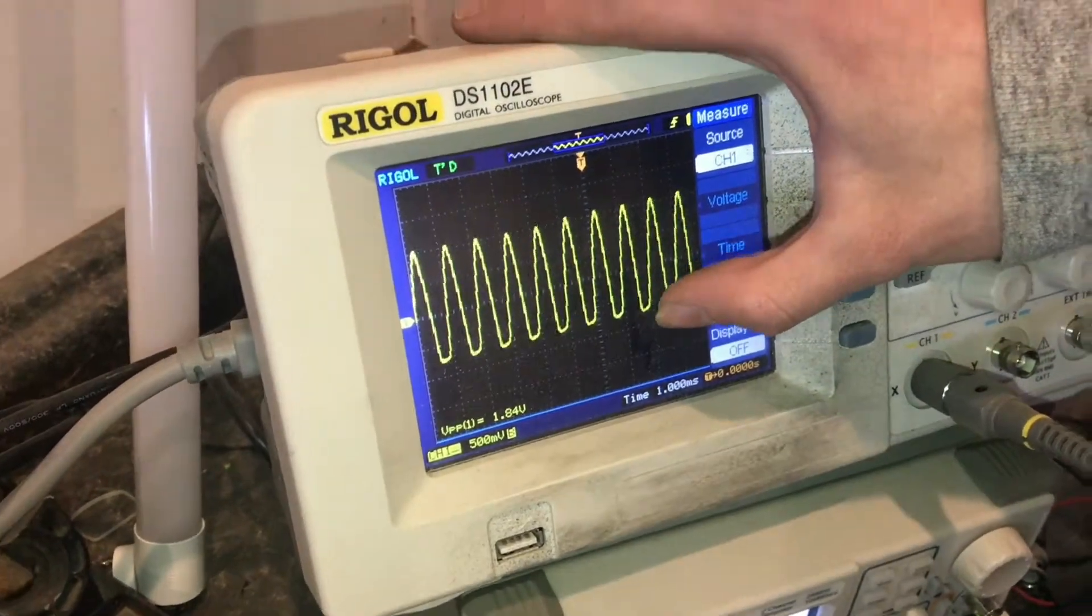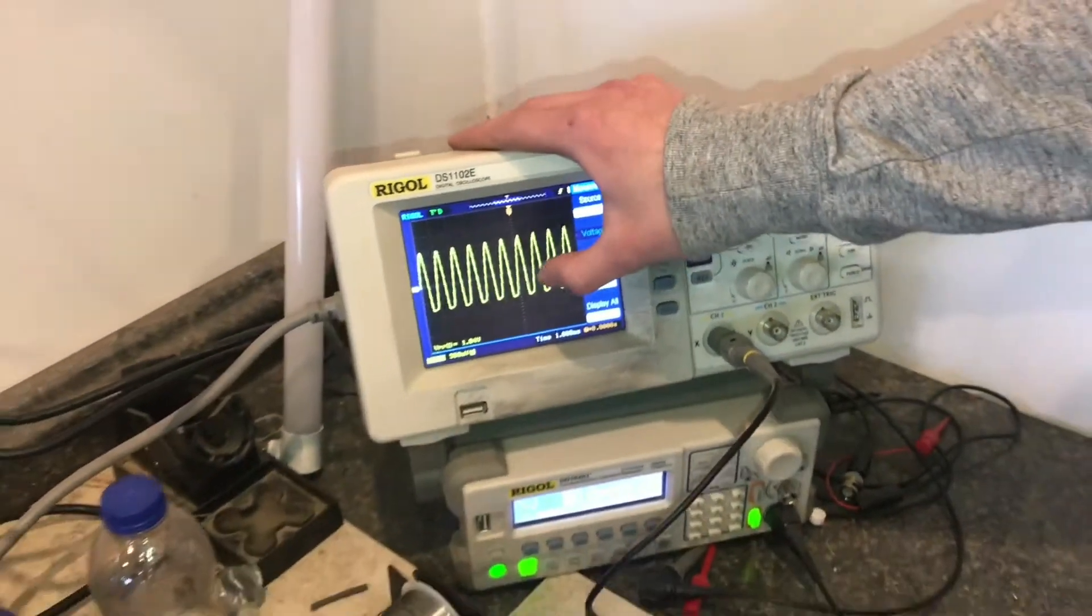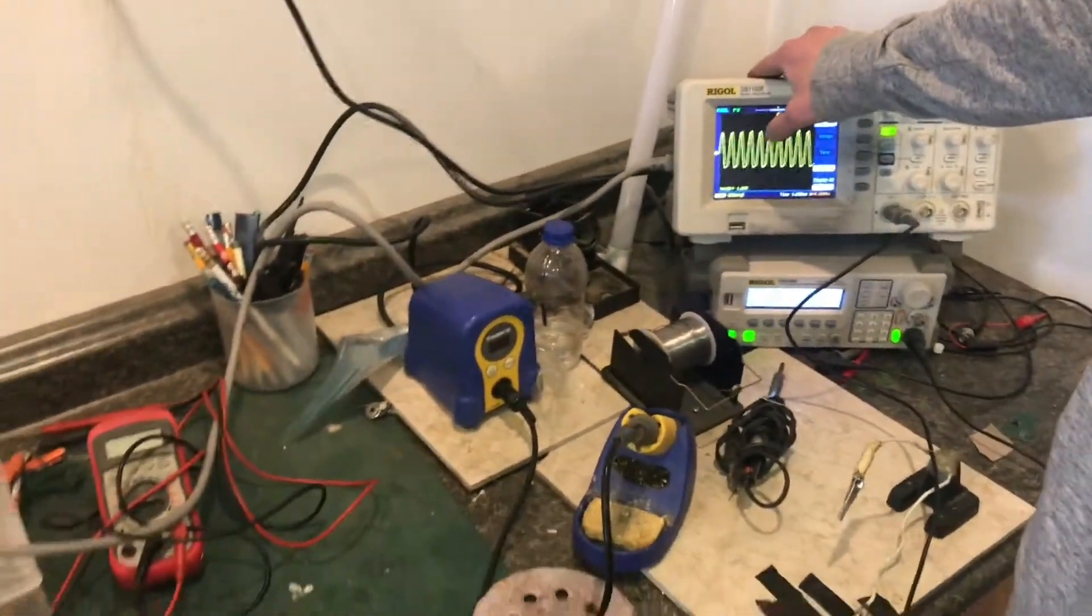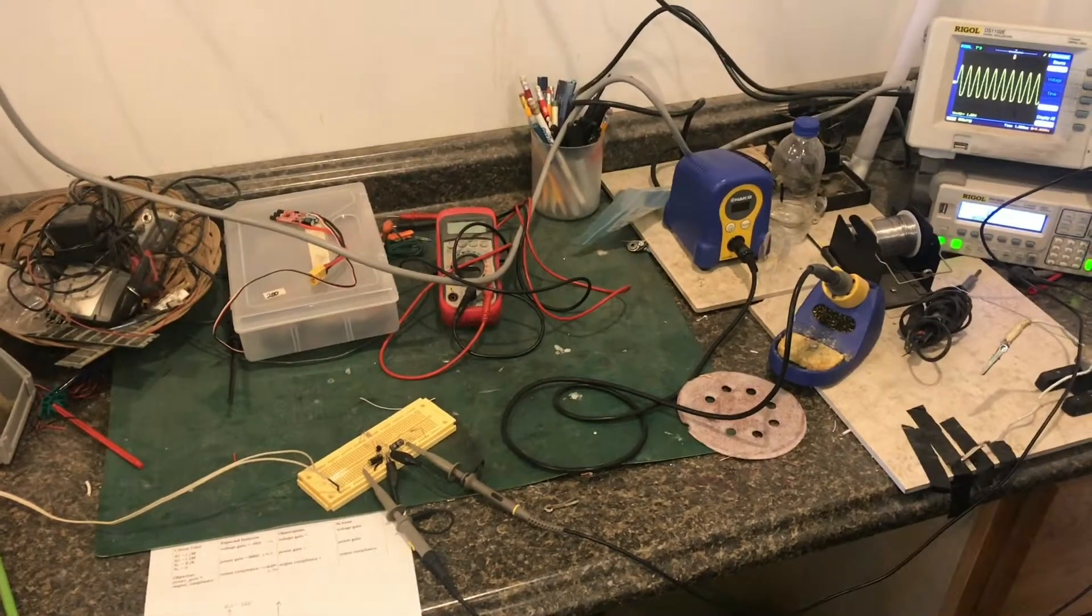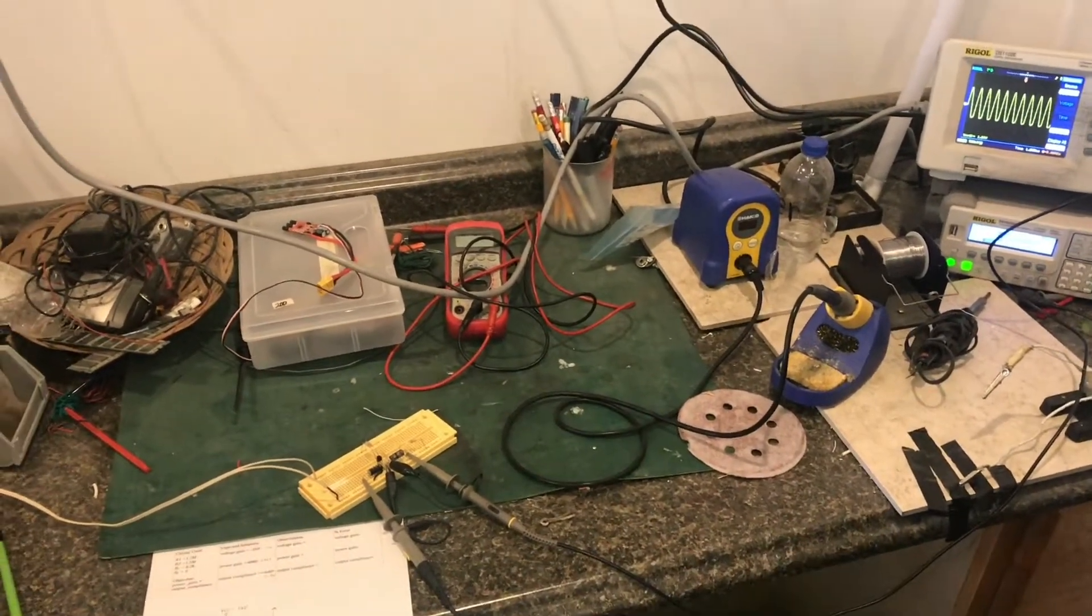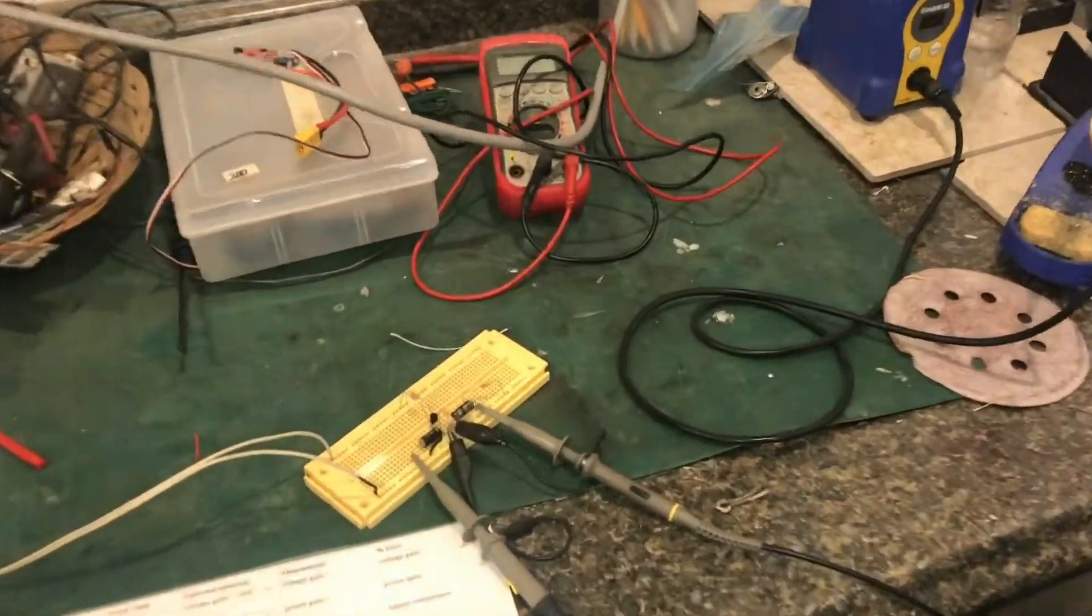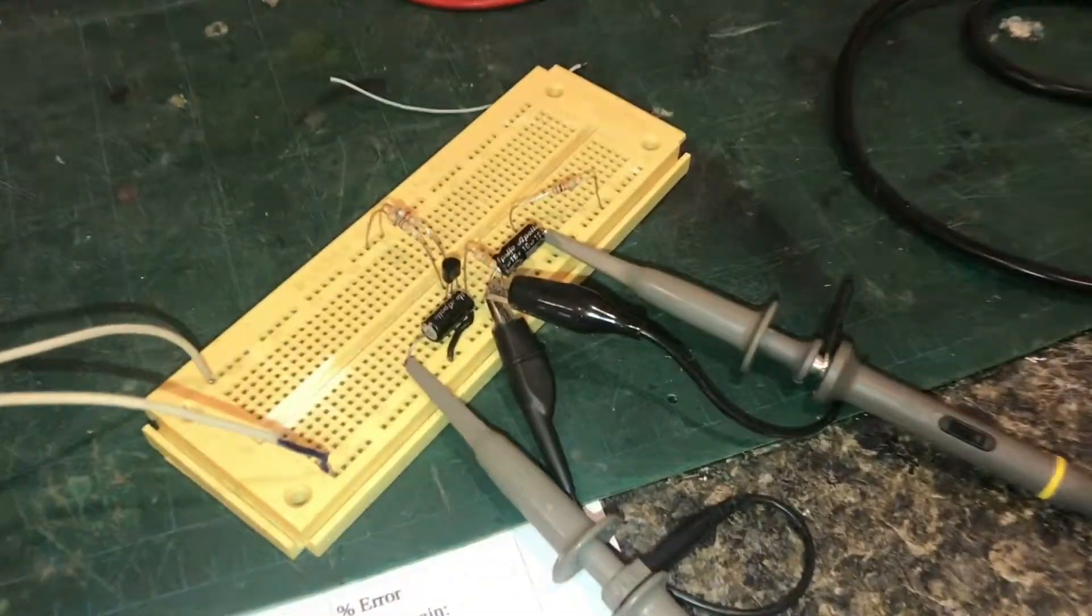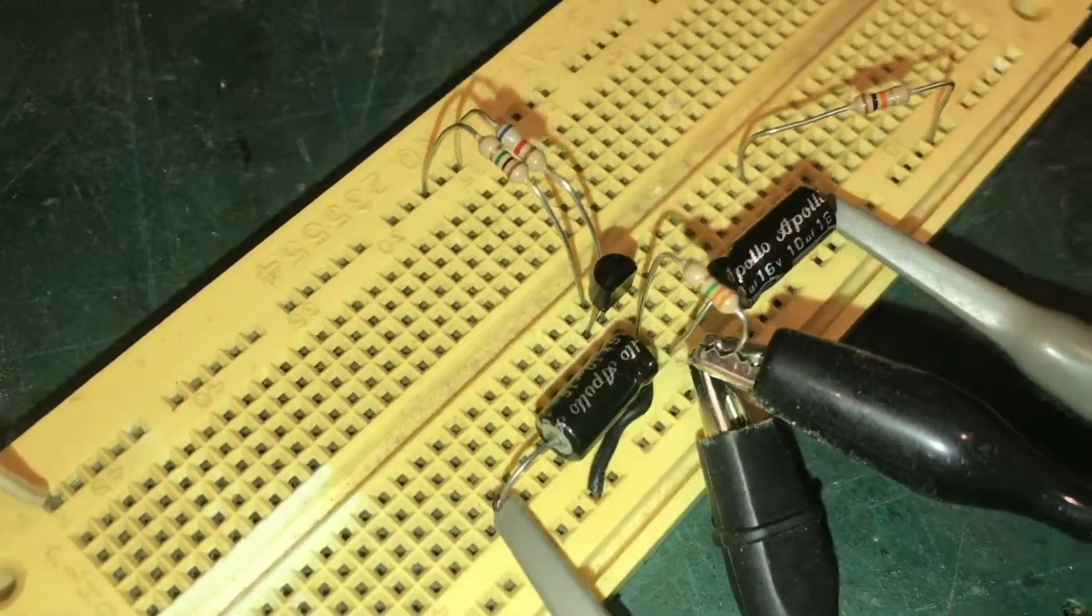point seven volts it's clipping. So that's definitely something that's different from what we calculated, but the voltage gain is there. So now I'm curious as to what's causing the clipping, but also very excited that the circuit has the voltage gain that we predicted and is performing pretty close to what the computer expected.